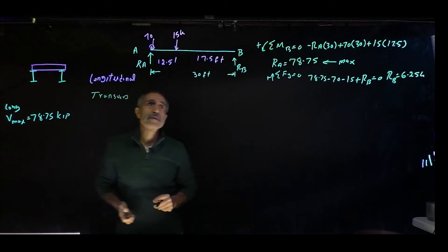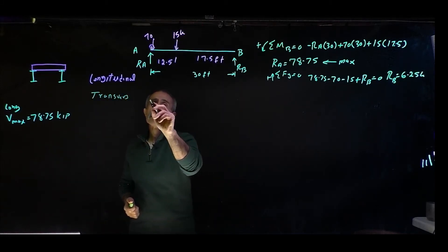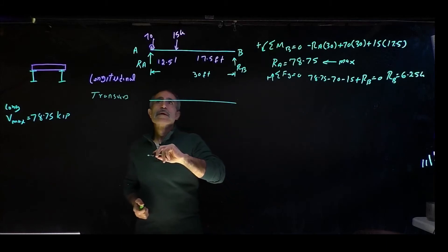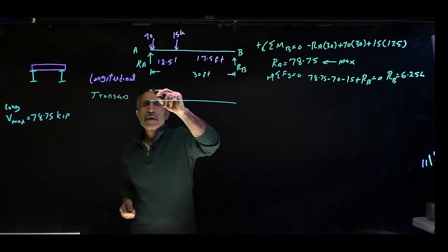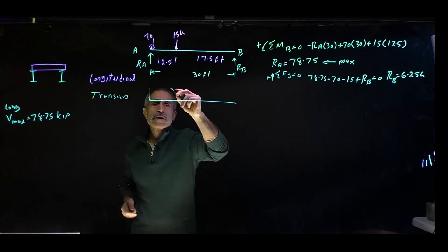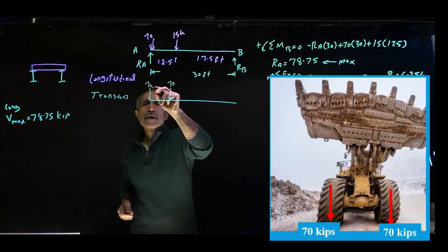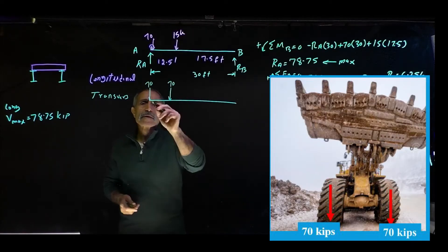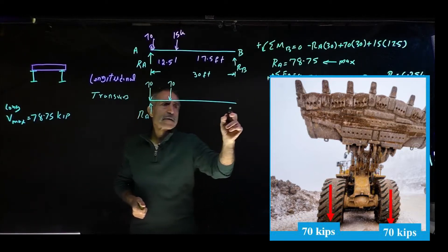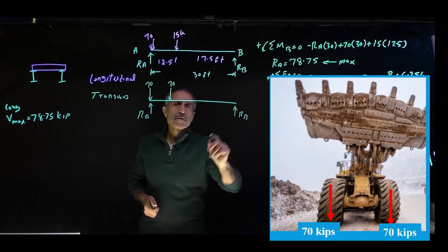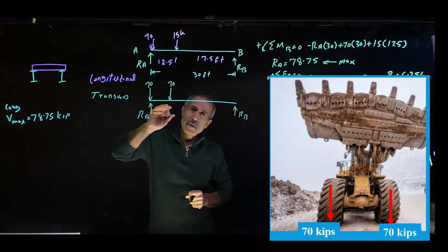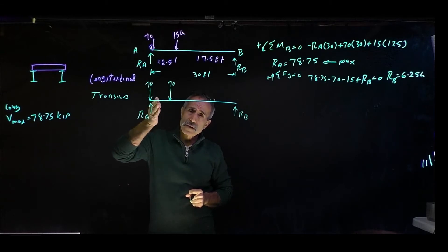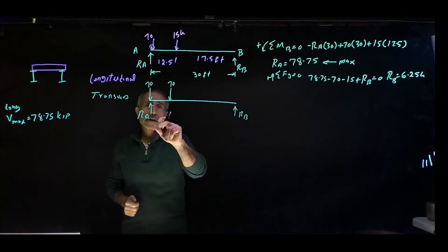For the transverse case, the loader dumps with both front wheels on the beam simultaneously — so we have 70 kips at one location and another 70 kips nearby. We place reactions RA and RB. The maximum shear happens when the heaviest tire is directly on top of the reaction. The spacing here is 8.5 feet, leaving 21.5 feet to the far reaction.